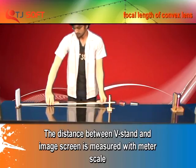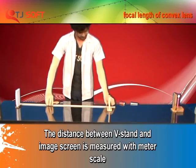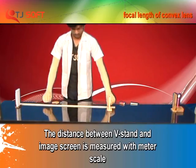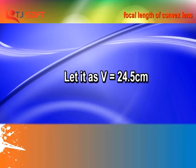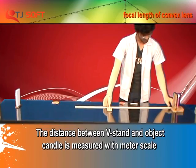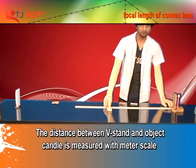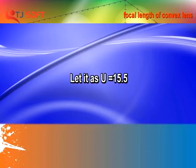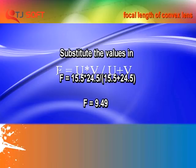The distance between the V Stand and the image screen is measured with the Metroscale. Let it be V = 24.5 cm. The distance between the V Stand and the object candle is measured with the Metroscale. Let it be U = 15.5 cm. Substitute the values to find the focal length.